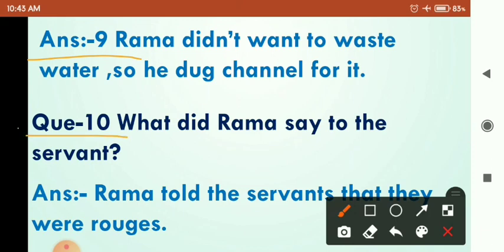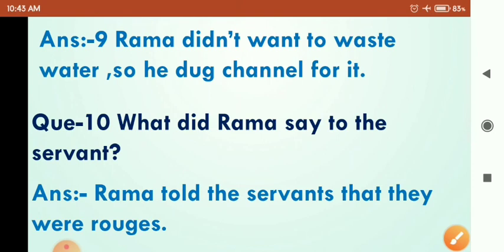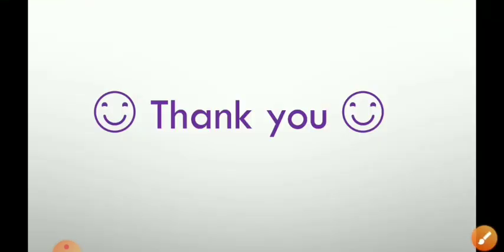Question ten: 'What did Rama say to the servants?' — Rama ने servants से क्या कहा? Answer: Rama told the servants that they were rogue. Rama ने servants को कहा कि वह rogue थे. Thank you for watching this video.